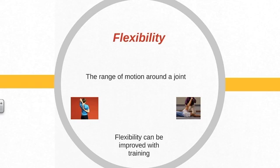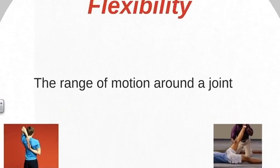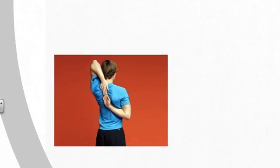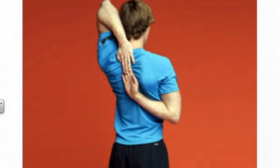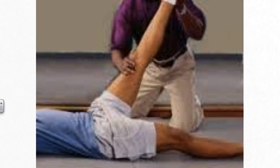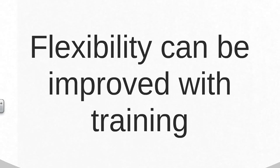Flexibility training is the range of motion around a joint. It is actually possible to be flexible in one area of the body but not in another. For example, a person can be very flexible in the shoulders but not in the hamstrings. Individuals are able to improve their flexibility with specific flexibility training, although it's an element that's often overlooked by athletes in their training programs.